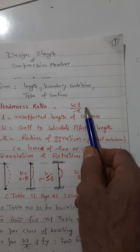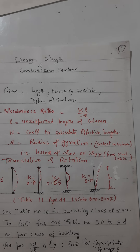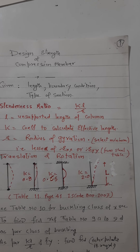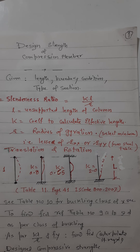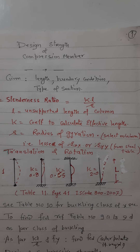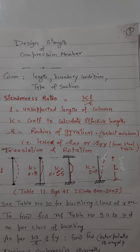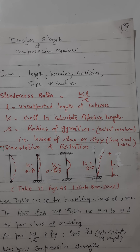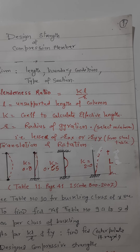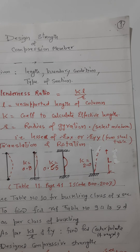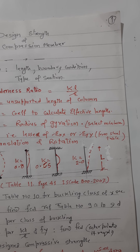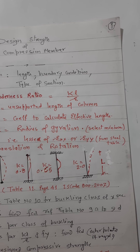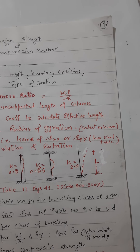Once we have the effective length, we divide it by r, the radius of gyration. The radius of gyration for each steel section is already given in the steel table. If not given, it can be calculated as the square root of I_xx divided by A, where I_xx is the moment of inertia and A is the area of cross-section — giving r_xx. Similarly, the square root of I_yy divided by A gives r_yy.